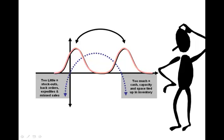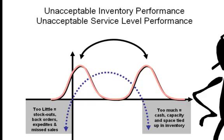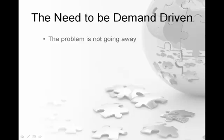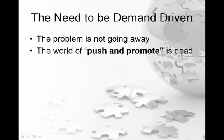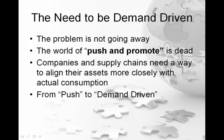Typically, these items oscillate between having too much and too little, spending very little time in the optimal zone. This bimodal distribution and the oscillation associated with it creates the three previously identified effects: unacceptable inventory performance, unacceptable service level performance, and high expedite-related waste. The problem is not going away. The post-World War II mode of operation, called push and promote, is dead. Conventional MRP was conceived, codified, and commercialized during the height of push and promote. Companies and supply chains need a better way — a way to better align assets with actual consumption, moving from push and promote to demand-driven.